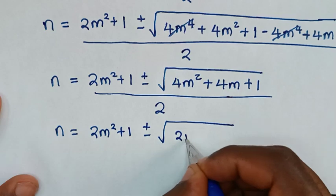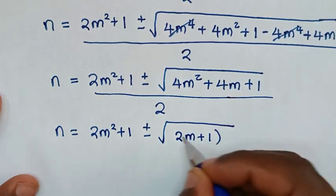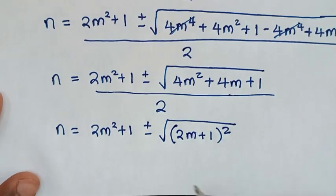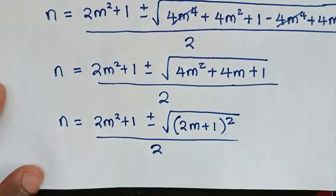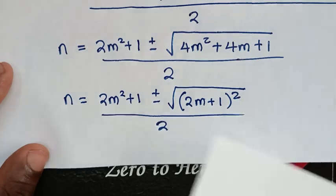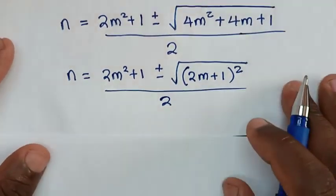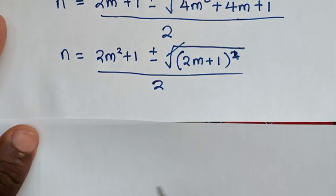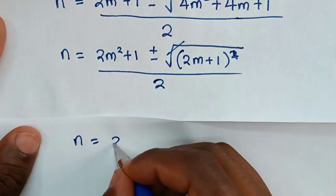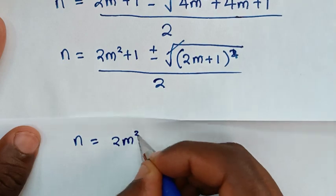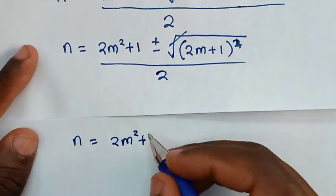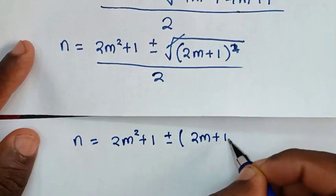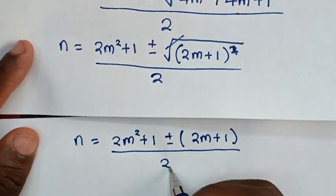The expression inside the square root, 4m squared plus 4m plus 1, is the expansion of (2m plus 1) squared. So the square root cancels the square, and it becomes n equals (2m squared plus 1) plus or minus (2m plus 1), all over 2.